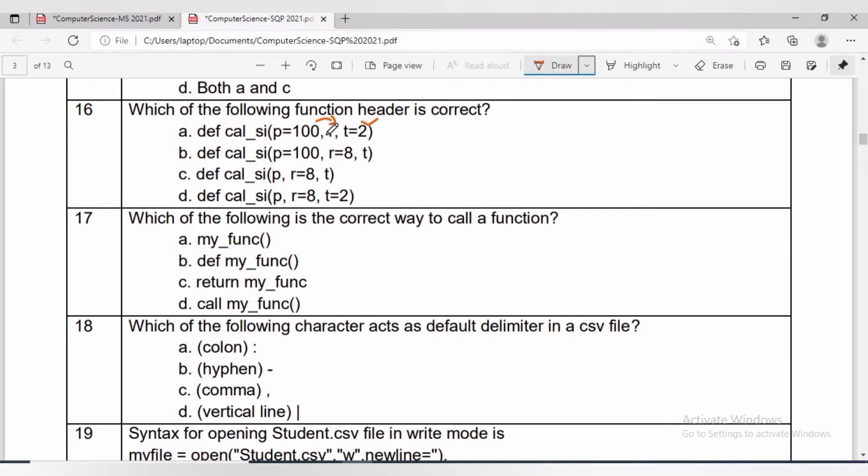Question 16 is from the working with functions chapter. Python allows us to assign default values to function parameters. The default values are specified in the function header of the function definition.